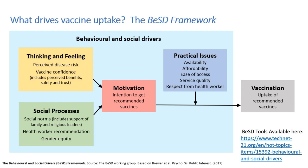The most powerful drivers are often in the practical issues and social processes categories — the purple and green boxes. For example, perceived social norms: someone's perception of what friends, family members, and leaders want them to do, called injunctive social norms, and the perception of what most other people are actually doing, called descriptive social norms. If you think most people in your community want you to vaccinate your child and that most will vaccinate their own children, you're probably more likely to vaccinate as well. Health worker recommendations and gender equity also fit into this category.